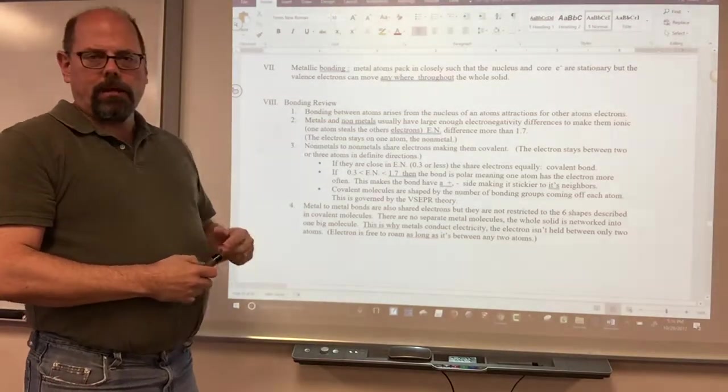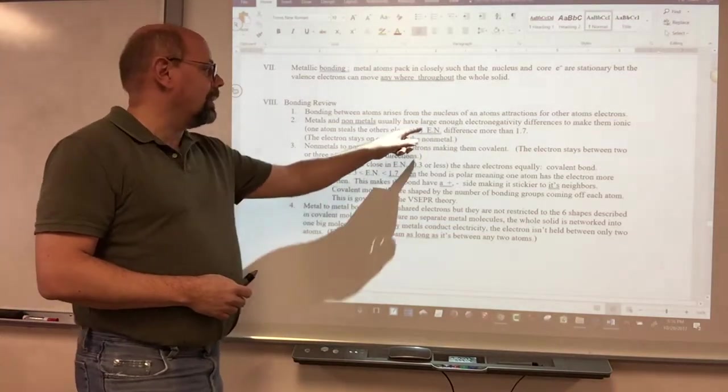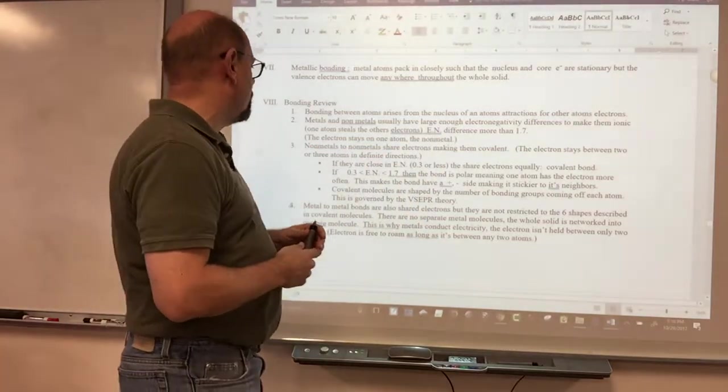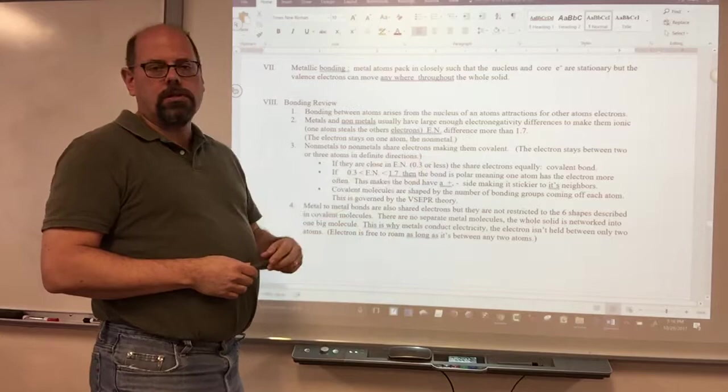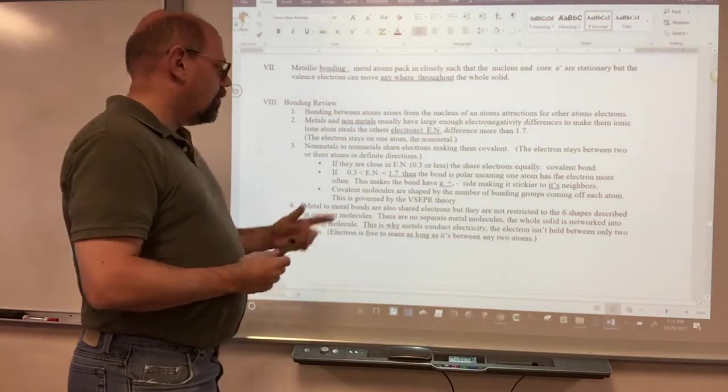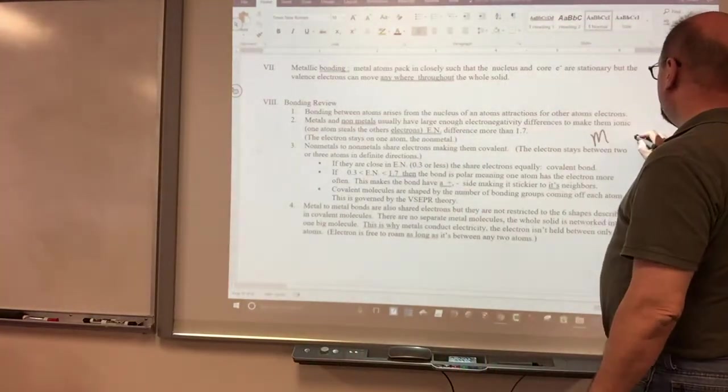Metals and non-metals from the two sides of the periodic table usually form ionic compounds because their electronegativities are big enough to make them steal one of their sets of electrons. The electronegativity usually is more than 1.7 from that side of the table to the other. So what happens if this is the metal and this is the non-metal?